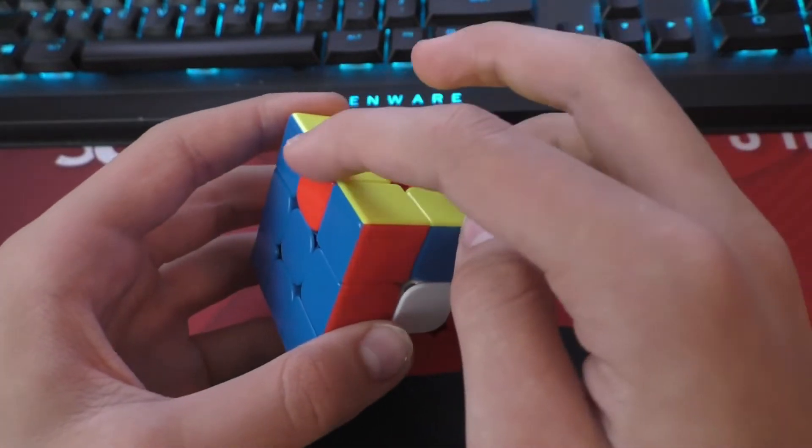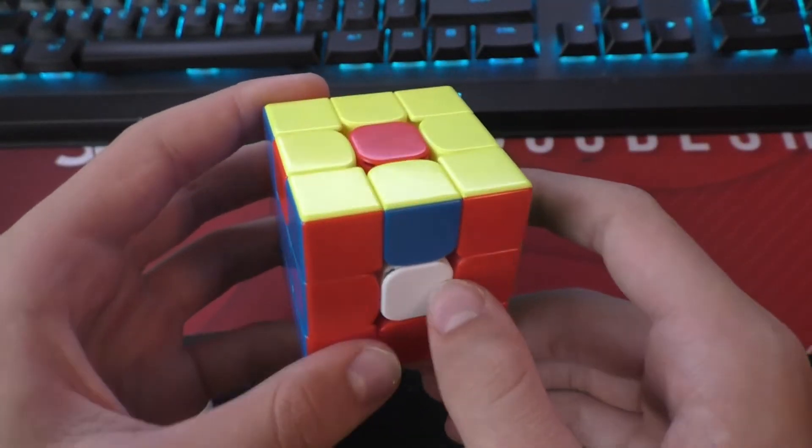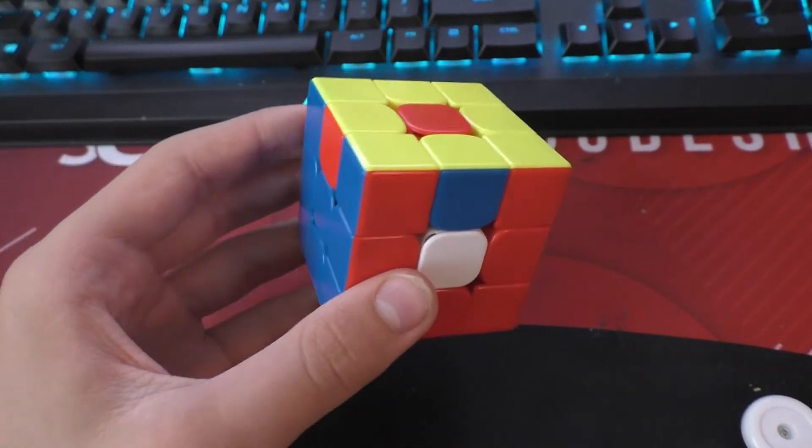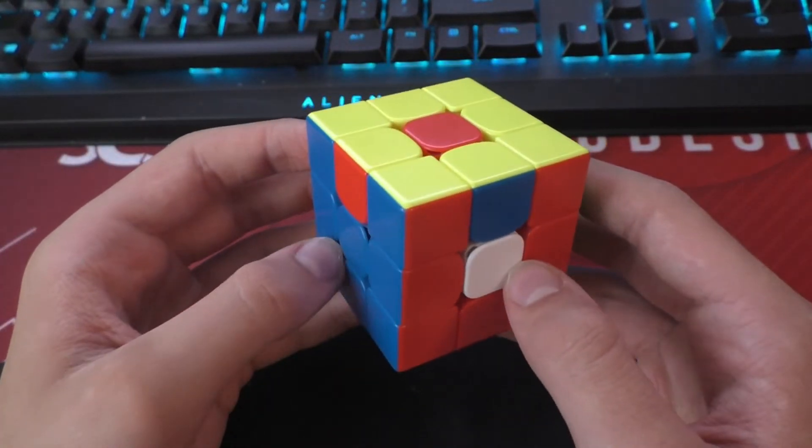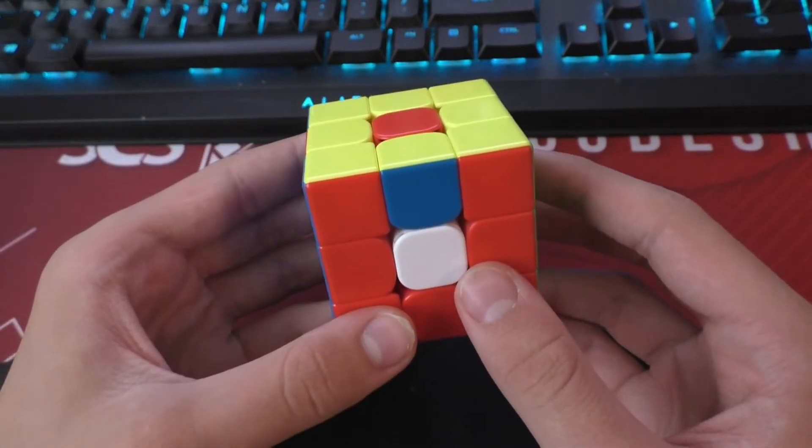Real parity would be a swap of two edges without moving anything else. This case on a 3x3 is technically just two parities: edge parity and center parity. And since there are two parities, they cancel out, and that means that the cube is actually solvable.